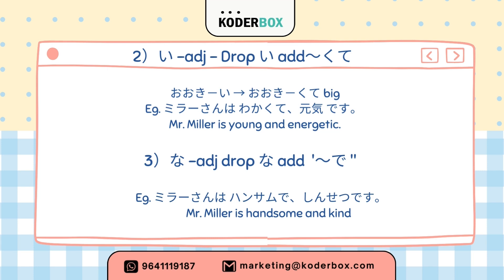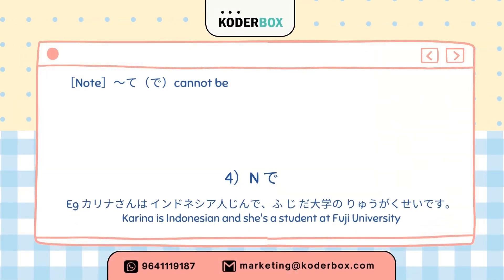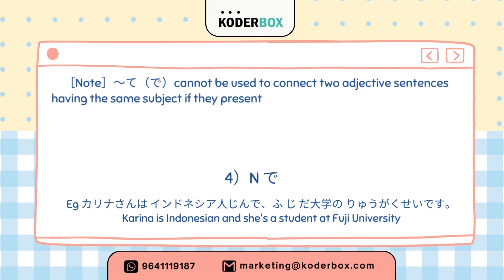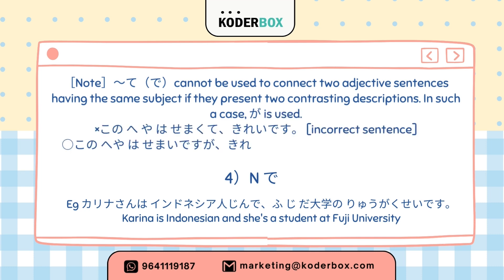Grammar 3: na-adjective — drop na and add de. Example: Mira san wa hansamu de shinsetsu desu — Mr. Myler is handsome and kind. Note: the te-form and de cannot connect two adjective sentences with the same subject if they present contrasting descriptions; in such cases, ga is used. Kono heya wa semai desu ga kirei desu — This room is small but clean (correct). Kono heya wa semakute kirei desu is incorrect.